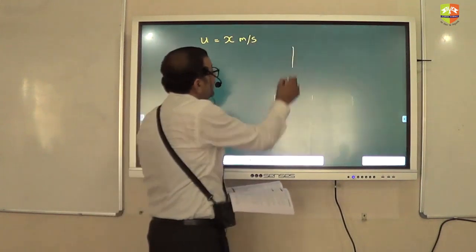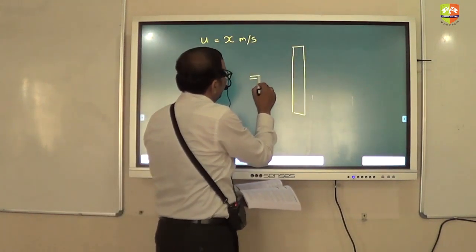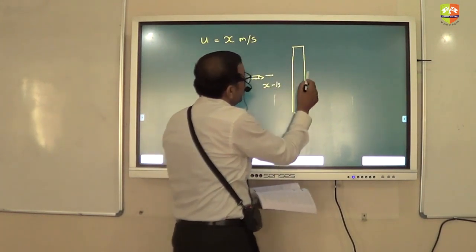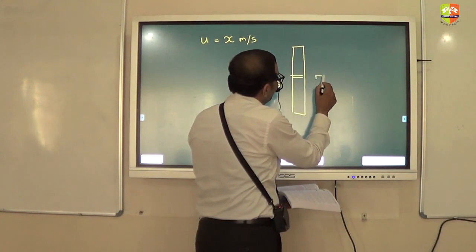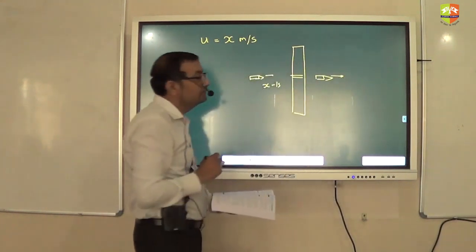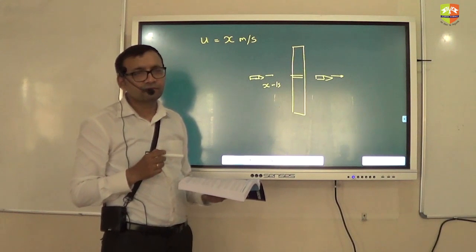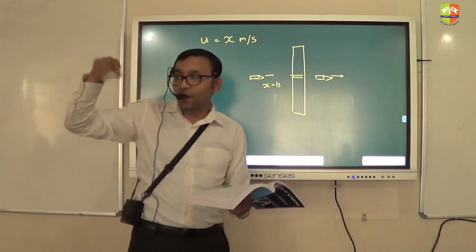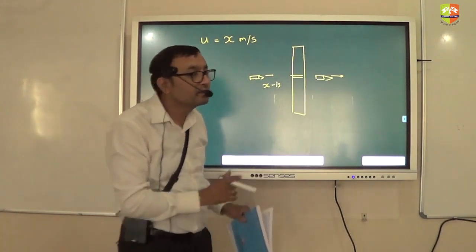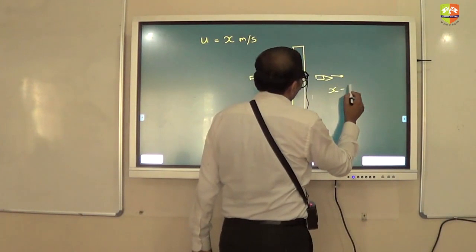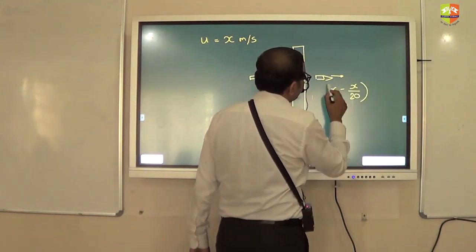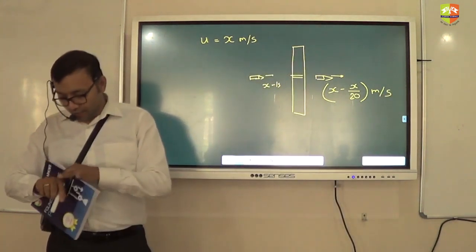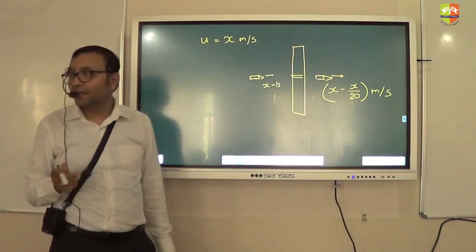What is happening is that, wait, let me explain what is happening. It is moving with x meter per second. Okay? It penetrates the plane and then it comes out. How much is this velocity? 1 by 20th is lost. So how much is remaining? x minus x by 20 is remaining? Yes or no? Yes. 1 by 20th is lost. So x minus x by 20 is remaining. Any doubt?